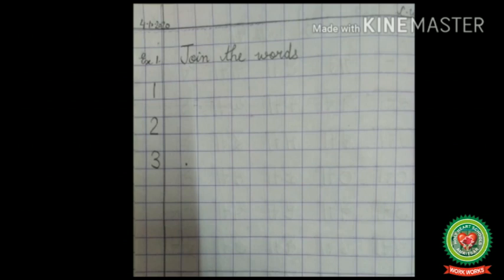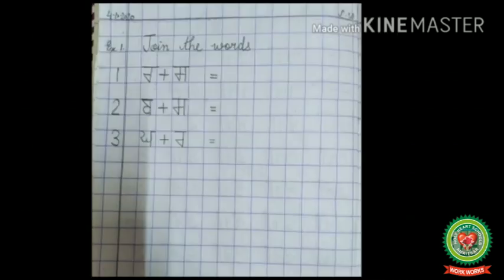Now set three numbers. Come to the first number — after leaving one box, write down 'rara,' then a plus sign in the next box, then 'sasa' in the next box. That means: rara plus sasa. Then leave one box and write the equals sign.